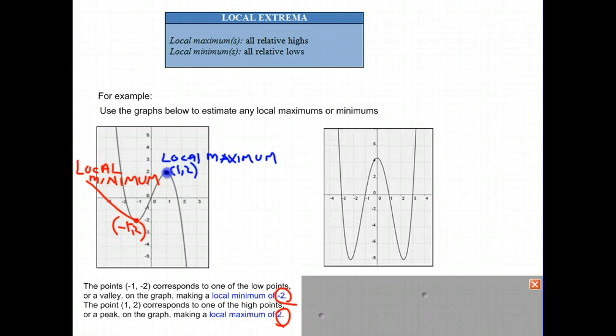Some people get confused whether you pick the x or y value, but if you're thinking of a high and a low or a max and a min, that naturally tells us we're going to be talking about the y-value. So once again, negative 2 is the local minimum, and 2 is a local maximum.